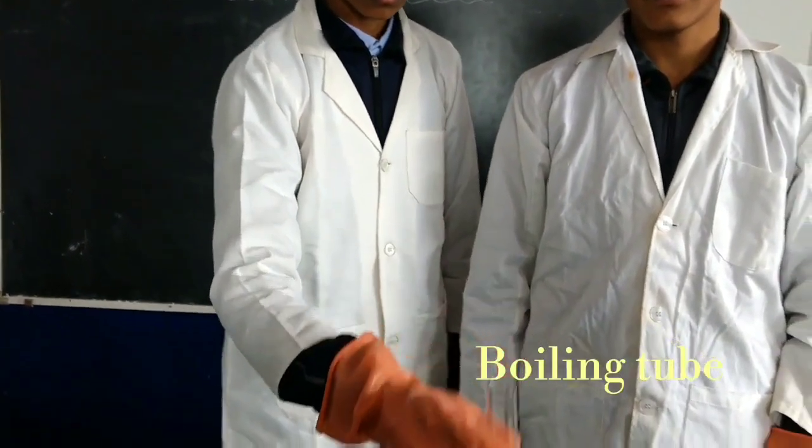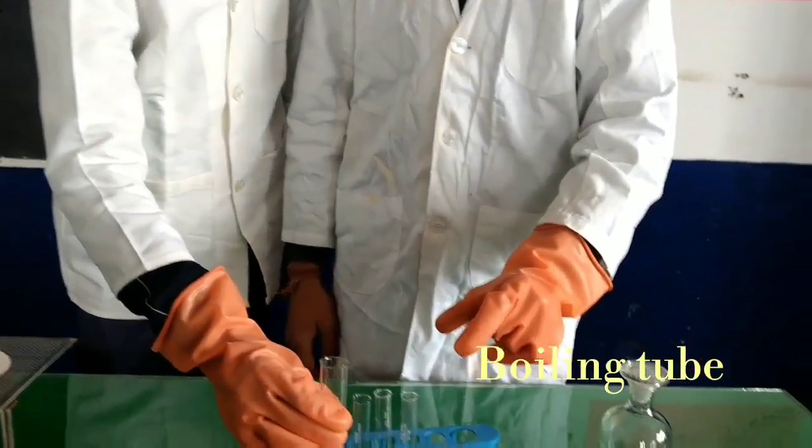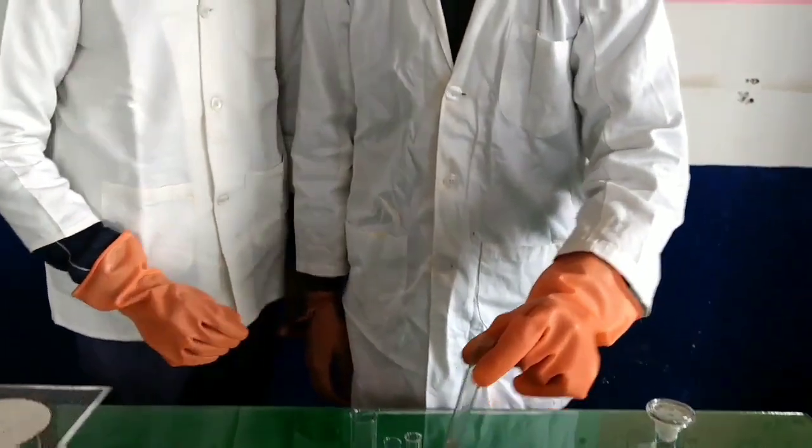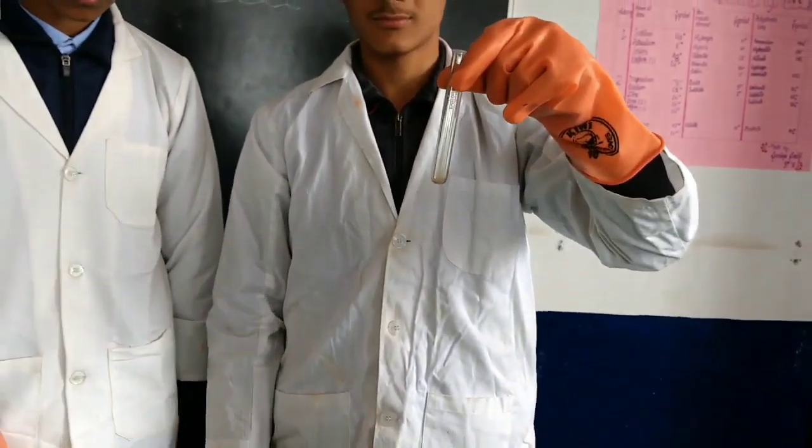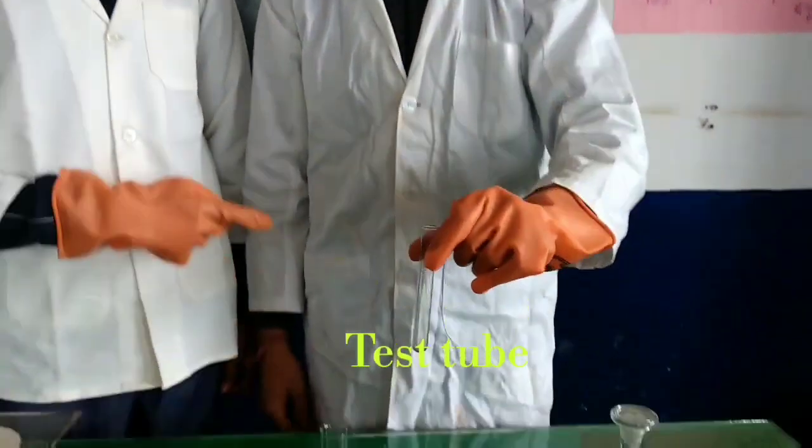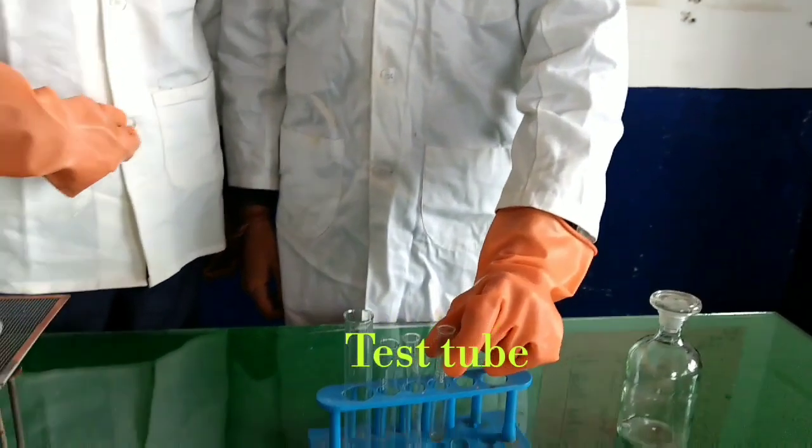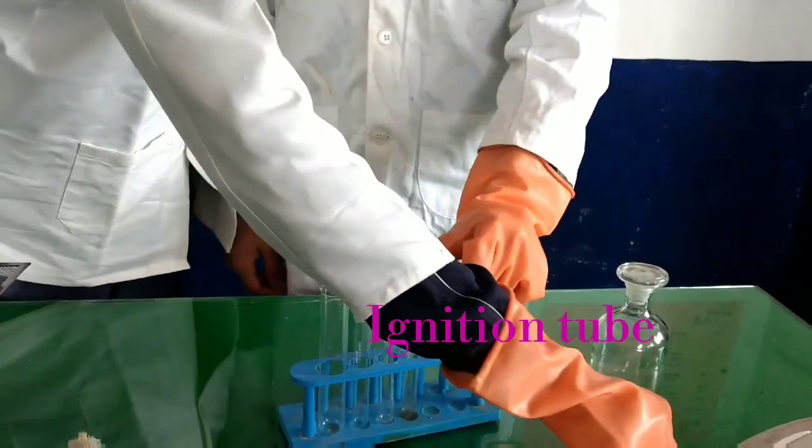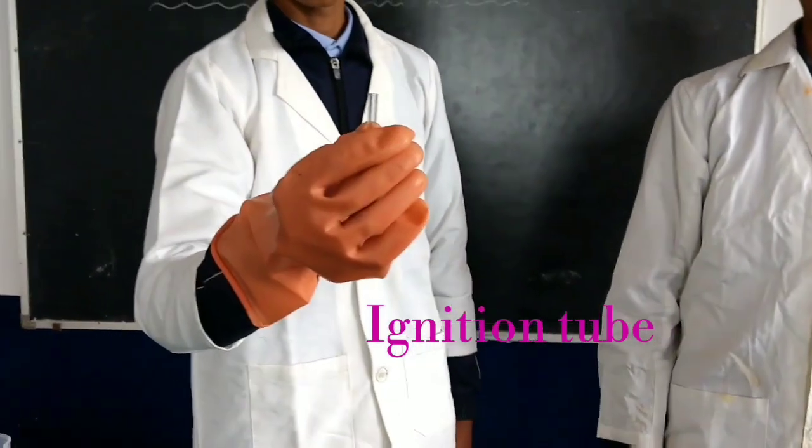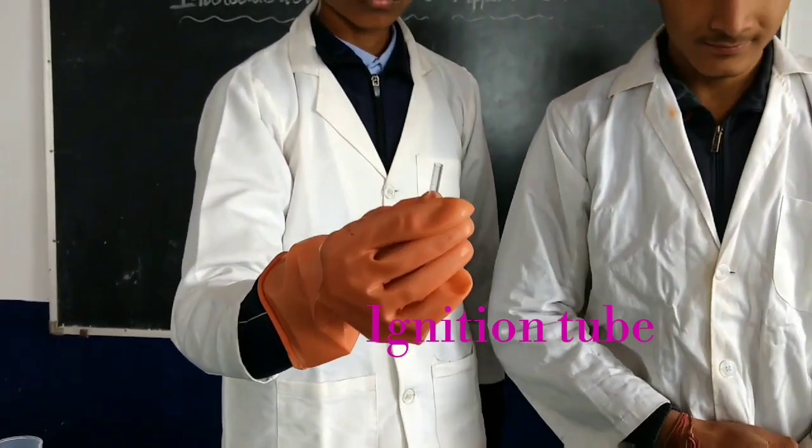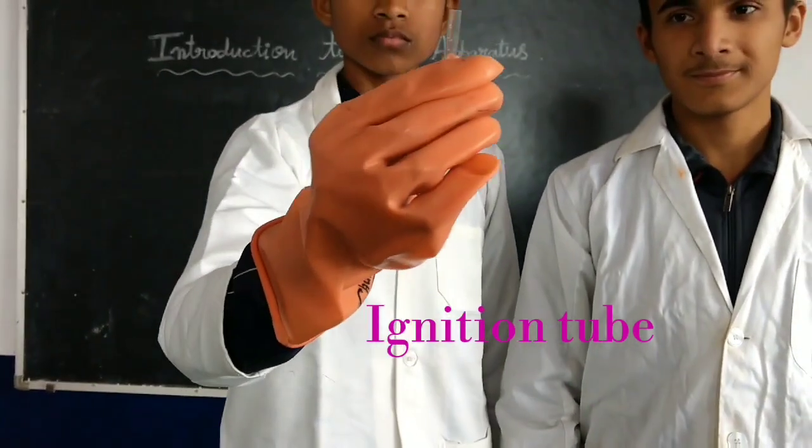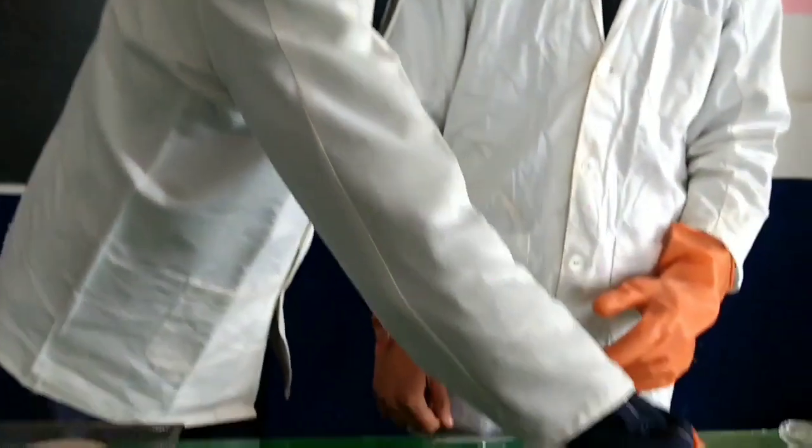First is the boiling tube, which is having 40 ml capacity. And if you want to boil less amount of liquid, then you can take the test tube. For different chemical reactions, we use this test tube. And the small tube with this is the ignition tube, in which we ignite the solid compound.